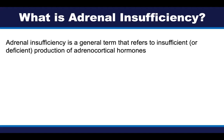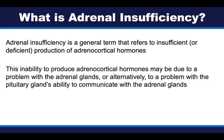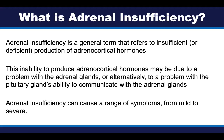Adrenal insufficiency is a general term that refers to insufficient or entirely deficient production of adrenocortical hormones. The inability to produce these adrenocortical hormones may be due to a problem with both adrenal glands, or due to a problem with the pituitary gland's ability to communicate with the adrenal glands. Adrenal insufficiency can cause a range of symptoms from mild to severe.